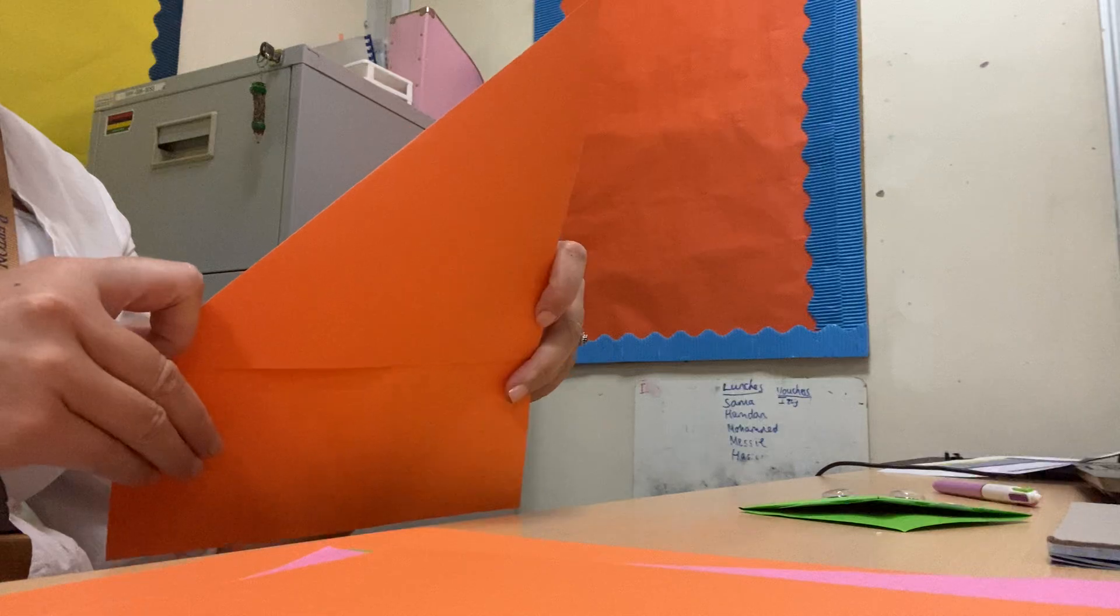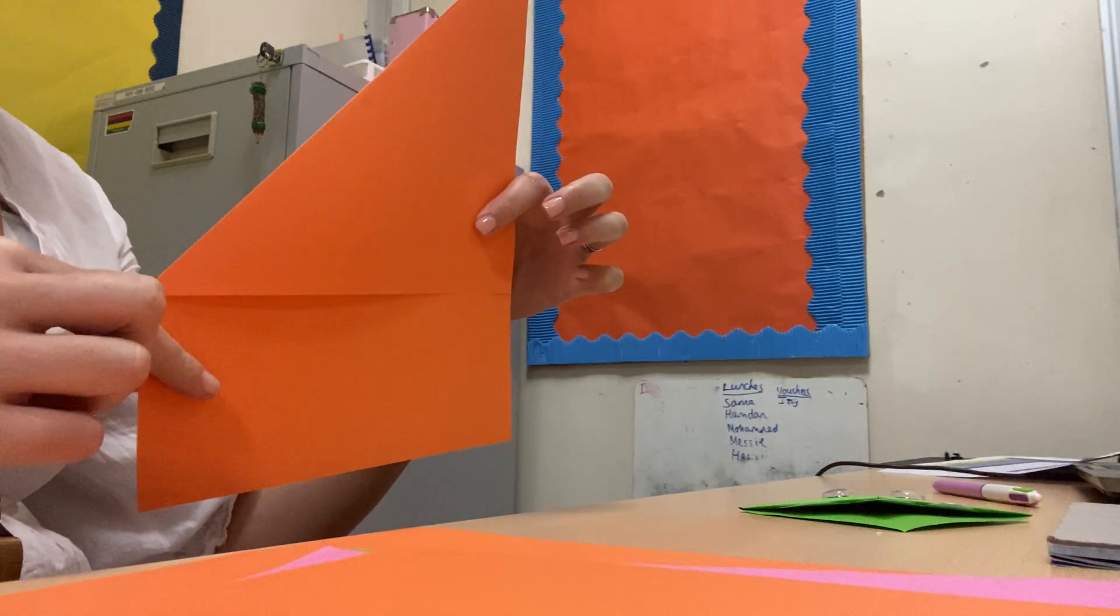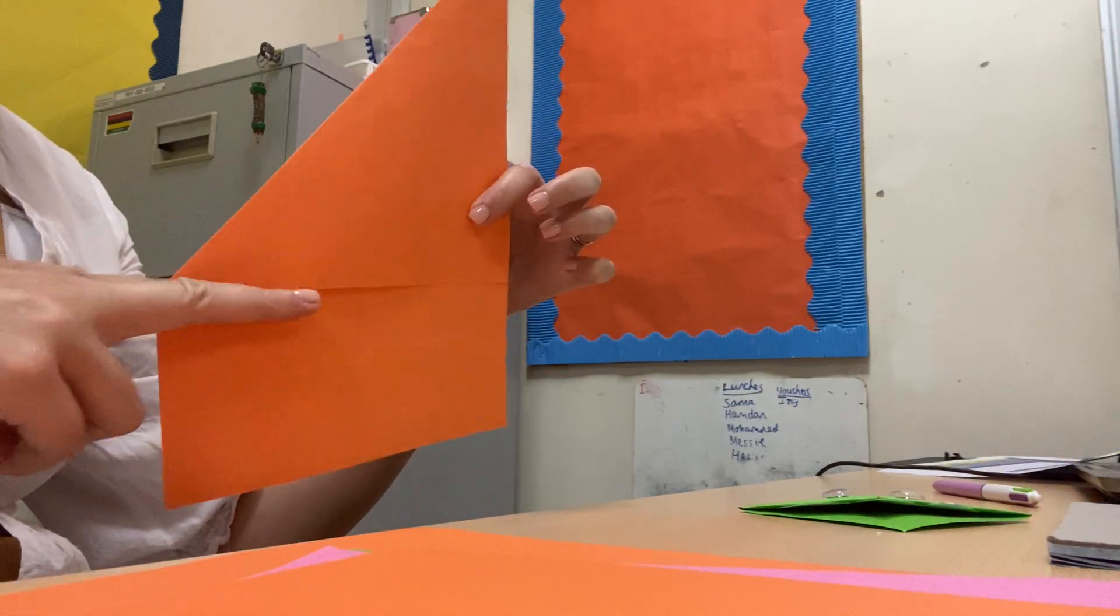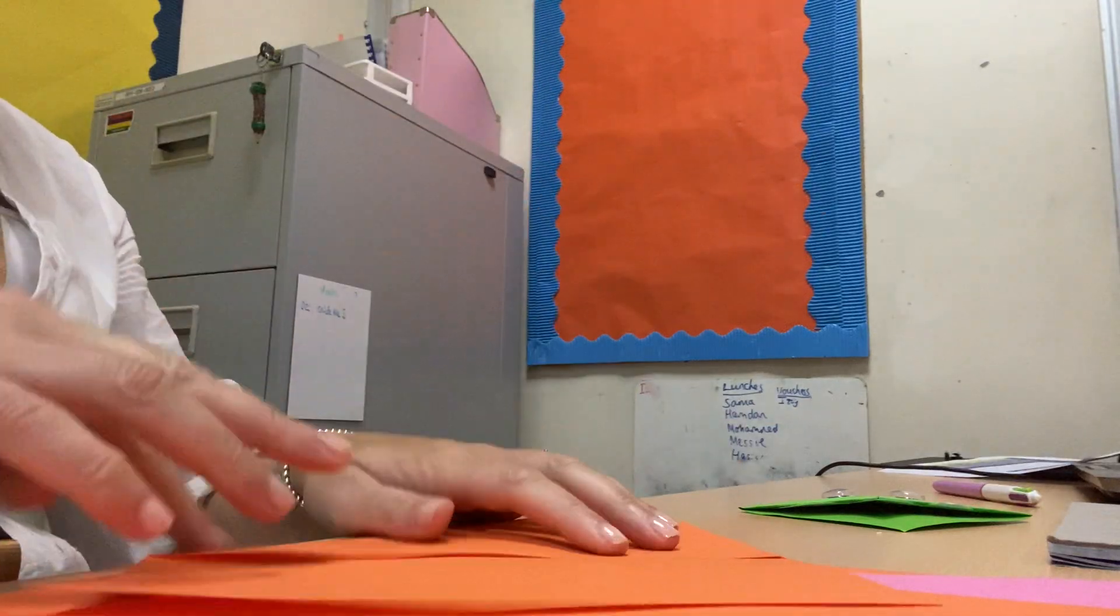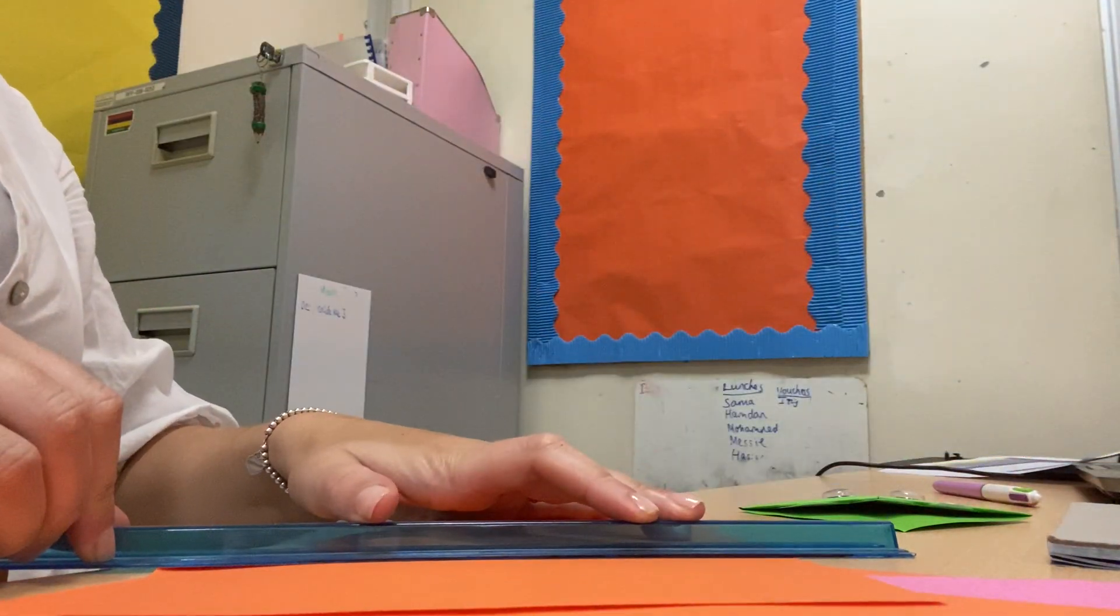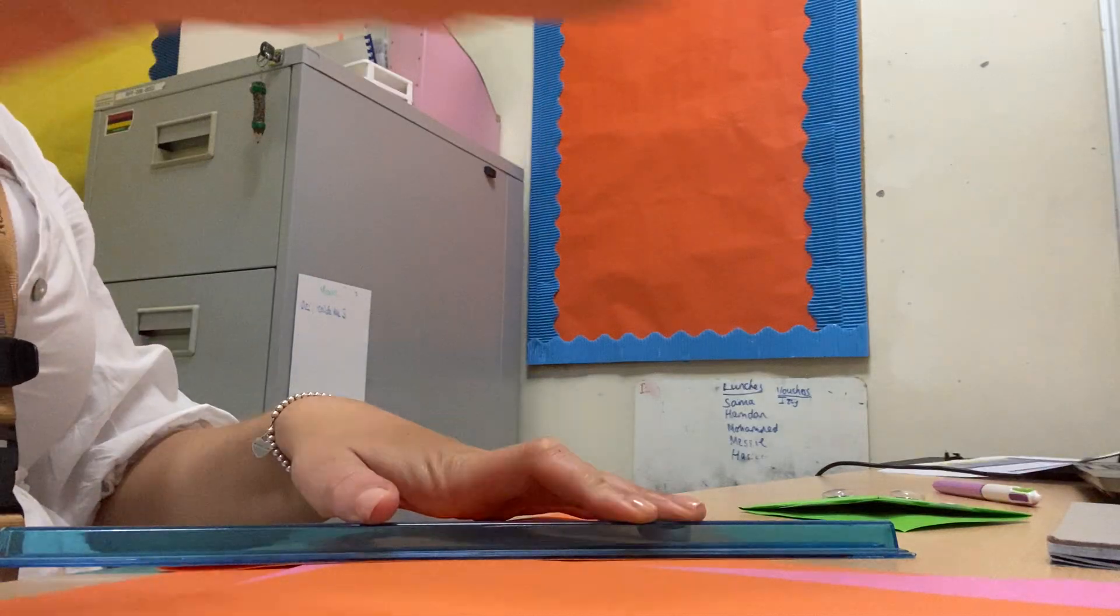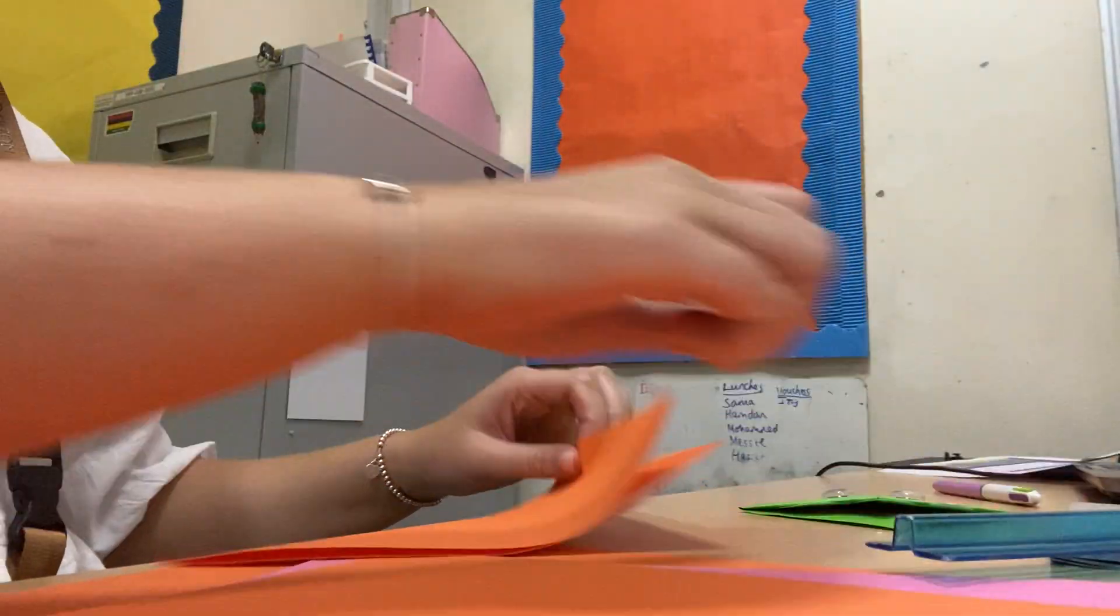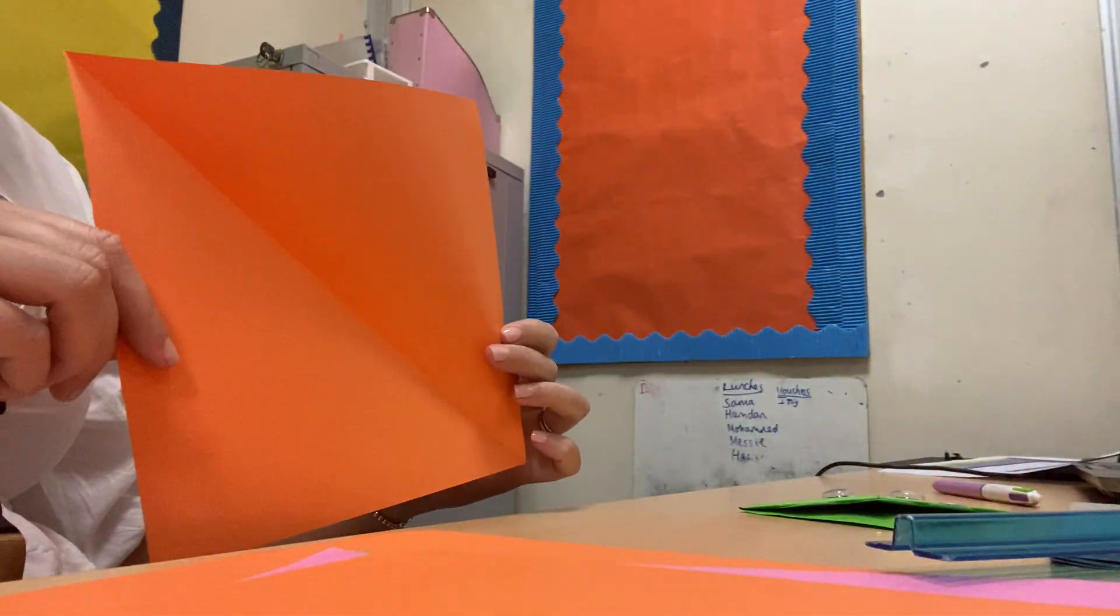So we've got that triangle along the top. We don't need this bottom bit so we can cut the bottom bit off. I'm going to use a ruler, put it along my line and rip it off. You then have a square.